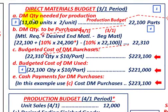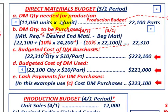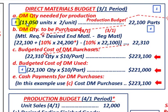Going back to our example, the direct material quantity needed for production: we have 11,050 units to produce times two parts per unit, giving us 22,100 parts. That's our step one result.